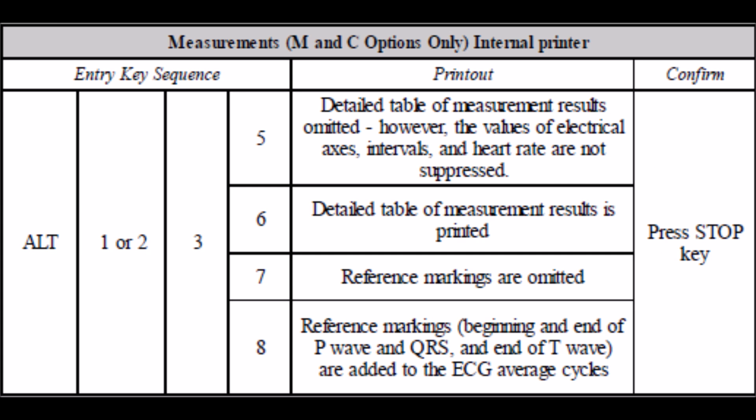When the interpretation and measuring software are installed in the AT1, the following codes are used to change the settings on the printouts.